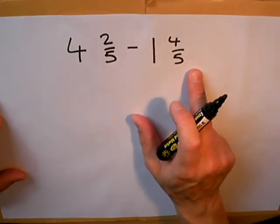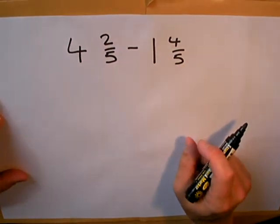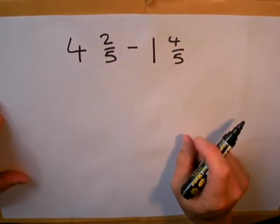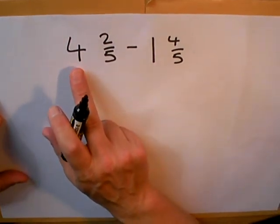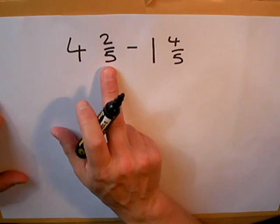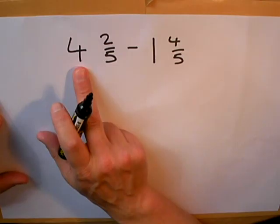If you notice that, and you can't take away the two small numbers at the top, you're going to have to convert one of these whole numbers to try and make yourself some more fractional parts. Now remember, if I turn one whole one into fifths, I'll get five fifths.